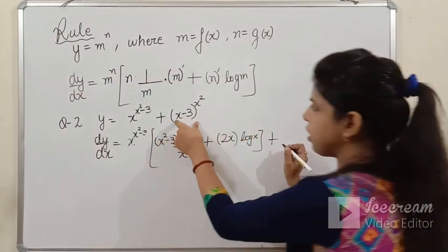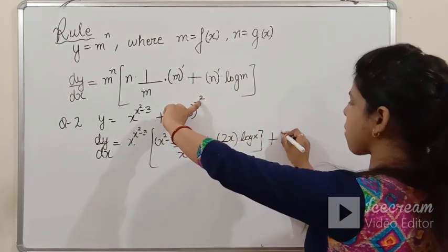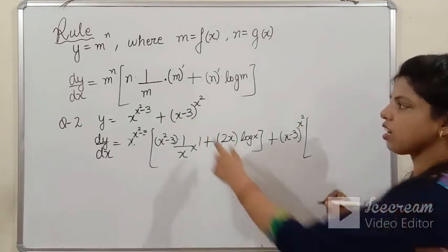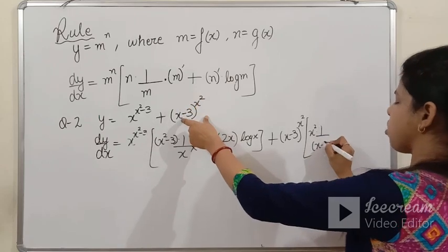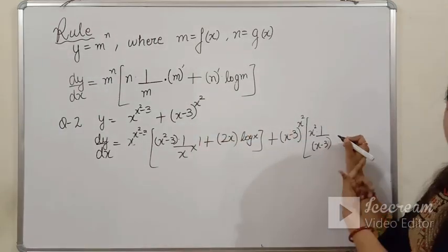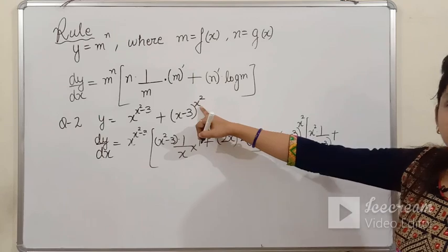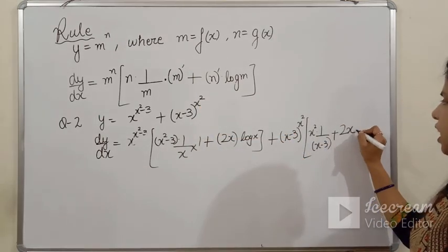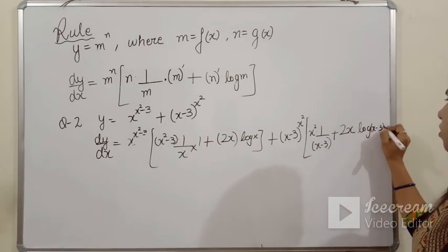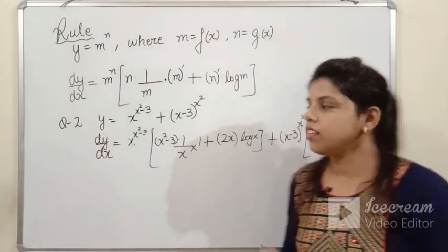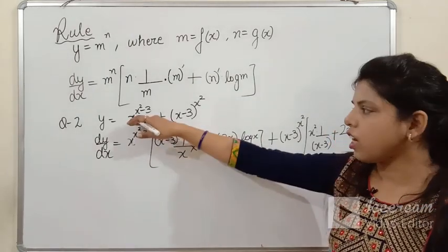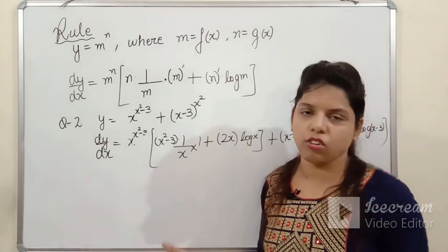For the second term of question 2: same rule — y as it is, power x² comes in multiplication into 1 upon (x−3), chain rule gives derivative of (x−3) as 1 (no need to write), plus derivative of n: derivative of x² is 2x, into log(x−3). That's the answer. Without taking any log separately, you solved it in one line — very easy!